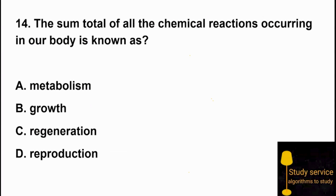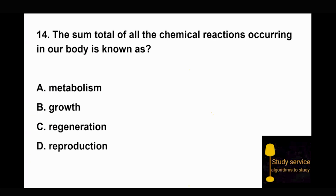Question 14: The sum total of all the chemical reactions occurring in our body is known as. We are talking about what is always happening inside our body — chemical reactions are constantly occurring. Option B: metabolism. Metabolism is the right answer — the sum of all chemical reactions happening inside our body is called metabolism.